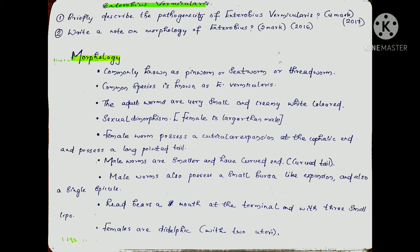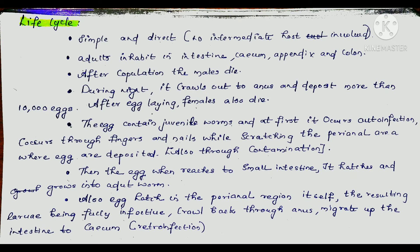Here is the life cycle. It is simple and direct — no intermediate host is involved. The adult inhabits the intestine: caecum, appendix, and colon.